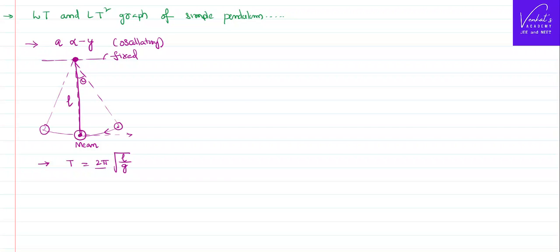From this, it's very clear that 2π is a constant, g is a constant, so time period is directly proportional to square root of length.